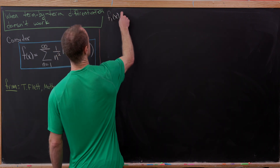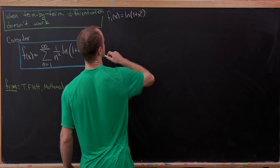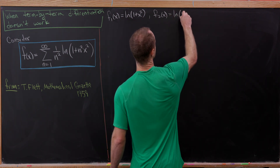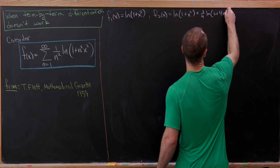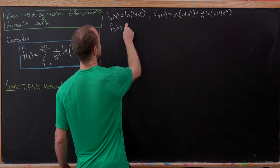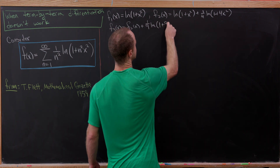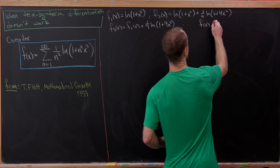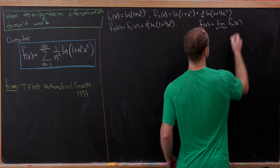So f₁ would be the first term: natural log of 1 plus x squared. Then f₂ would be the first two terms: natural log of 1 plus x squared plus one quarter natural log of 1 plus 4x squared. And f₃ would be f₂ plus 1 over 9 times natural log of 1 plus 9x squared, and so on. The function we're really looking at is the limit as n goes to infinity of this sequence of functions.